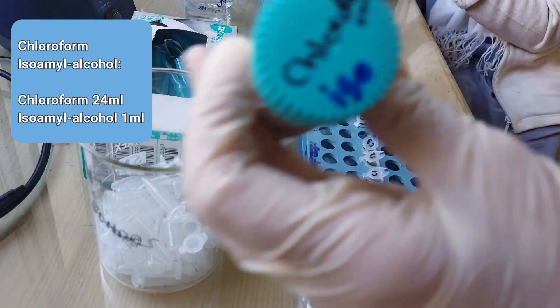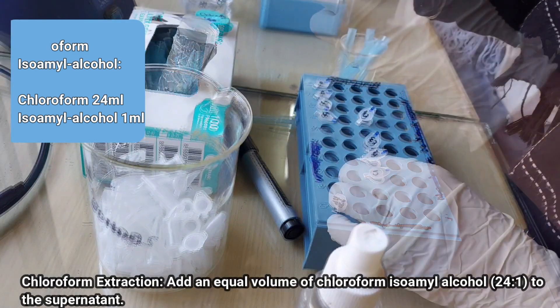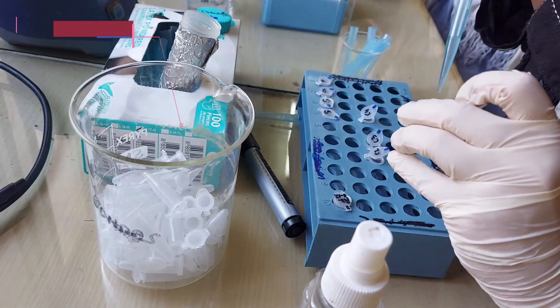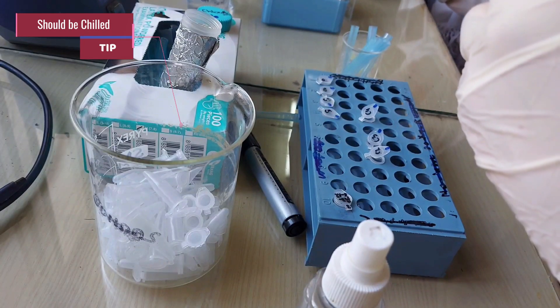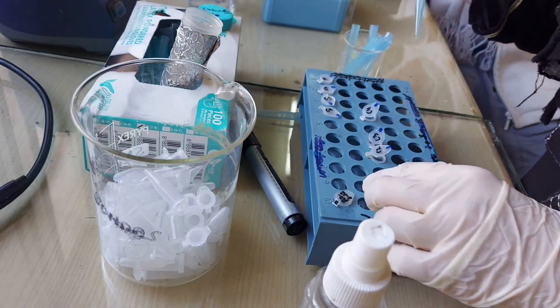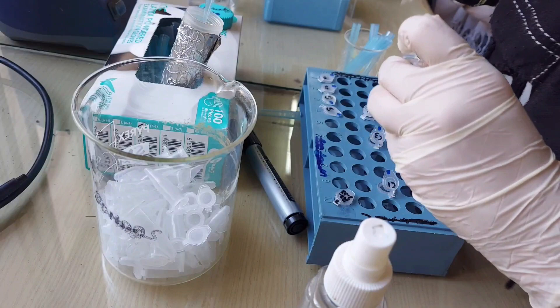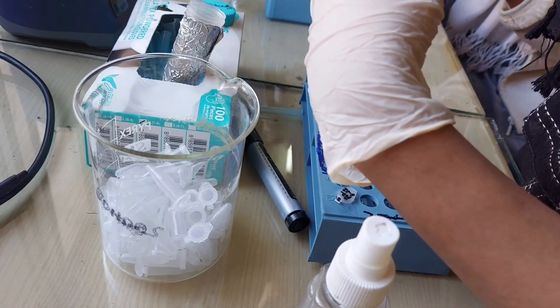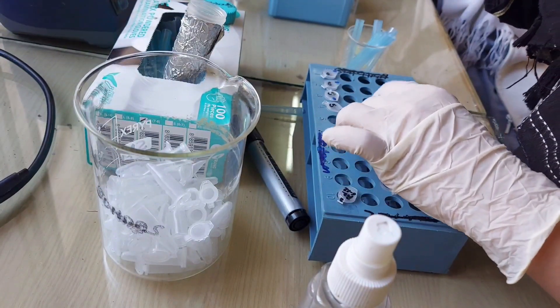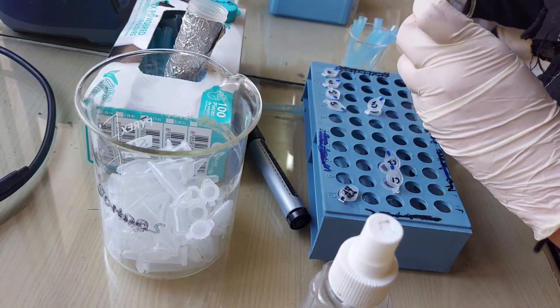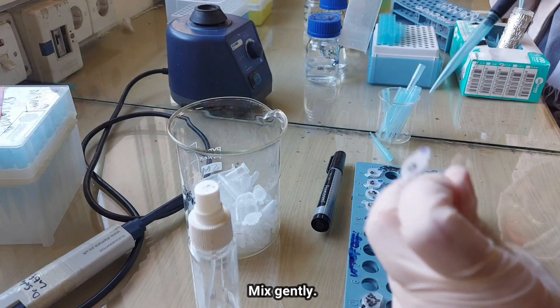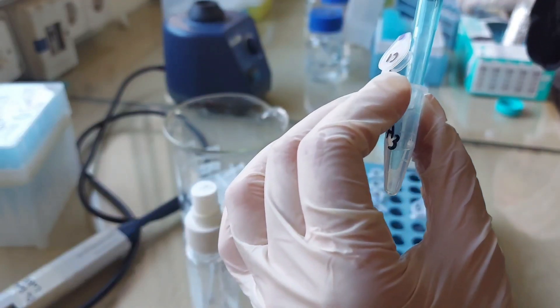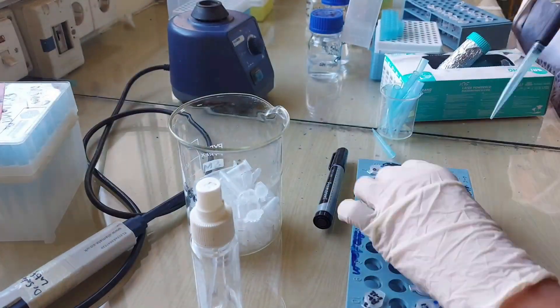Now our next step is chloroform extraction. Add an equal volume of chloroform isoamyl alcohol 24 to 1 ratio to the supernatant. Make sure to use chilled chloroform isoamyl alcohol. The purpose of chloroform isoamyl alcohol is to remove proteins from the preparation of nucleic acid. Now that I have added an equal volume of chloroform isoamyl alcohol to the supernatant, make sure to mix it gently. It is a good practice to pipette it before adding it to the centrifuge machine.